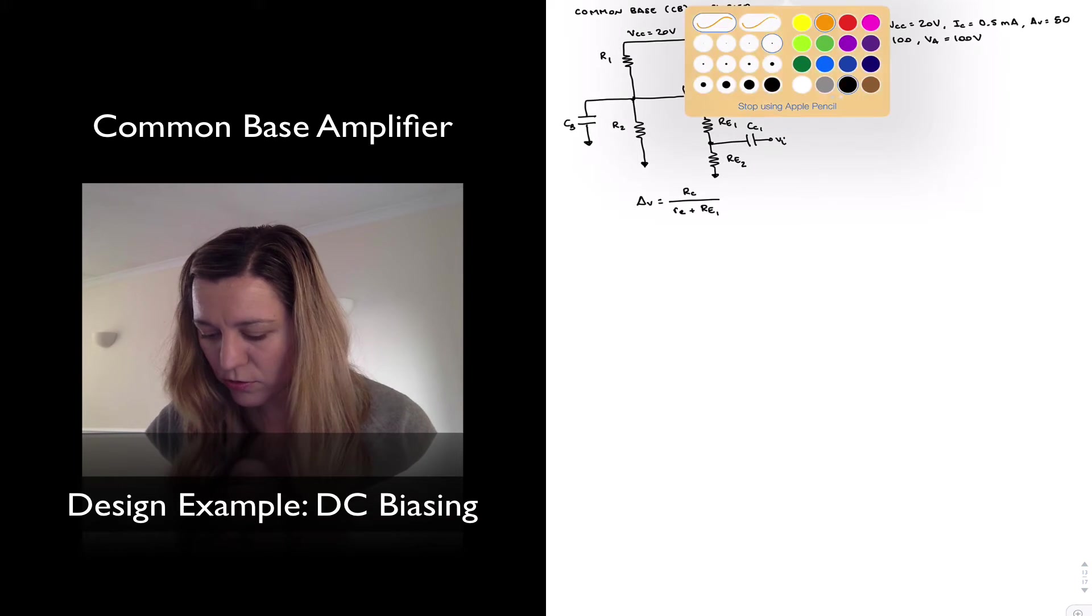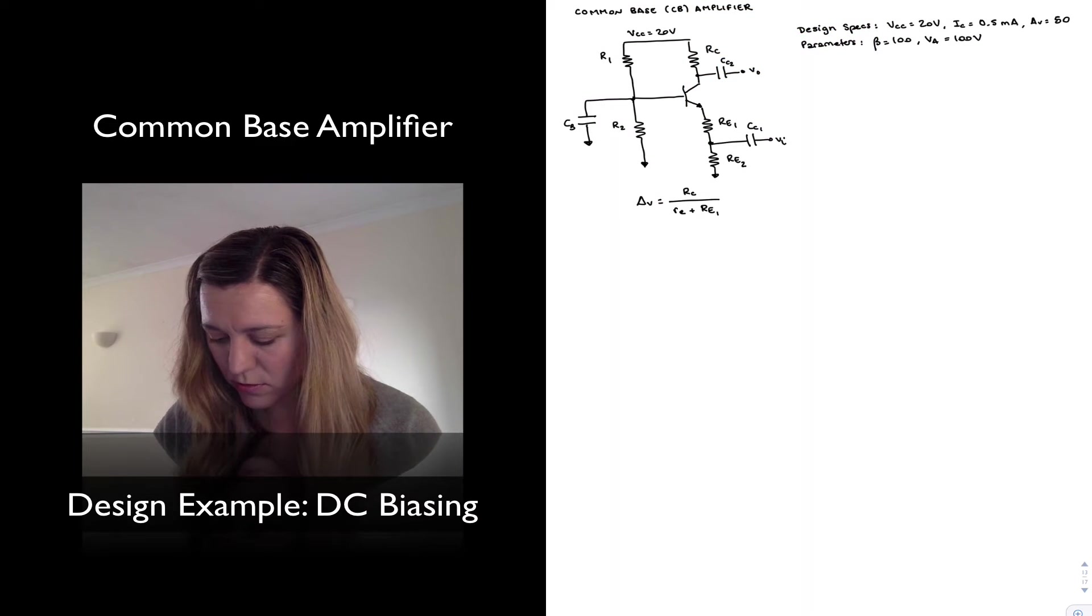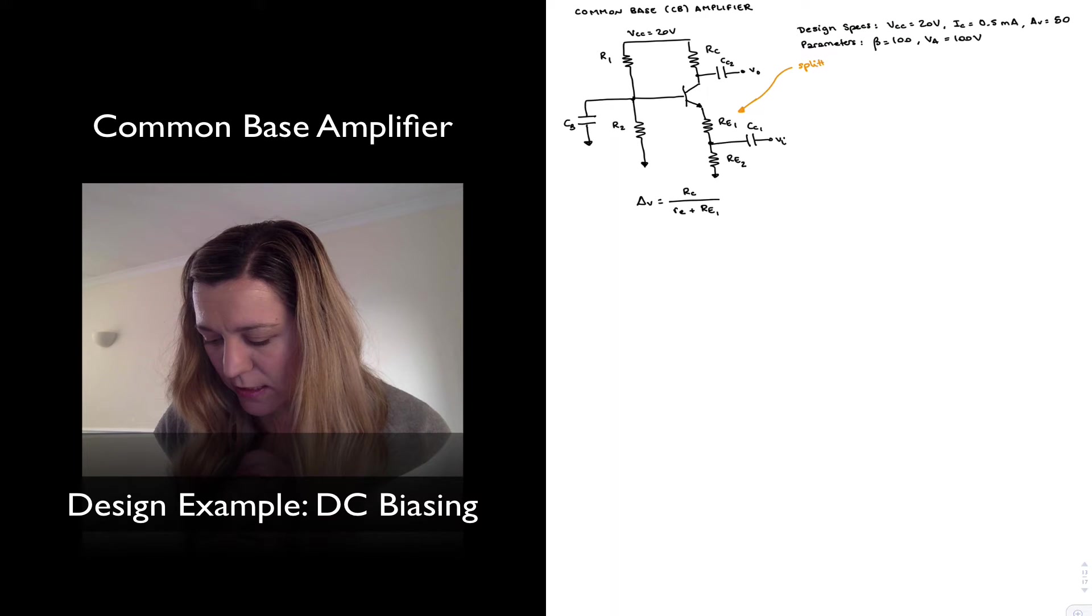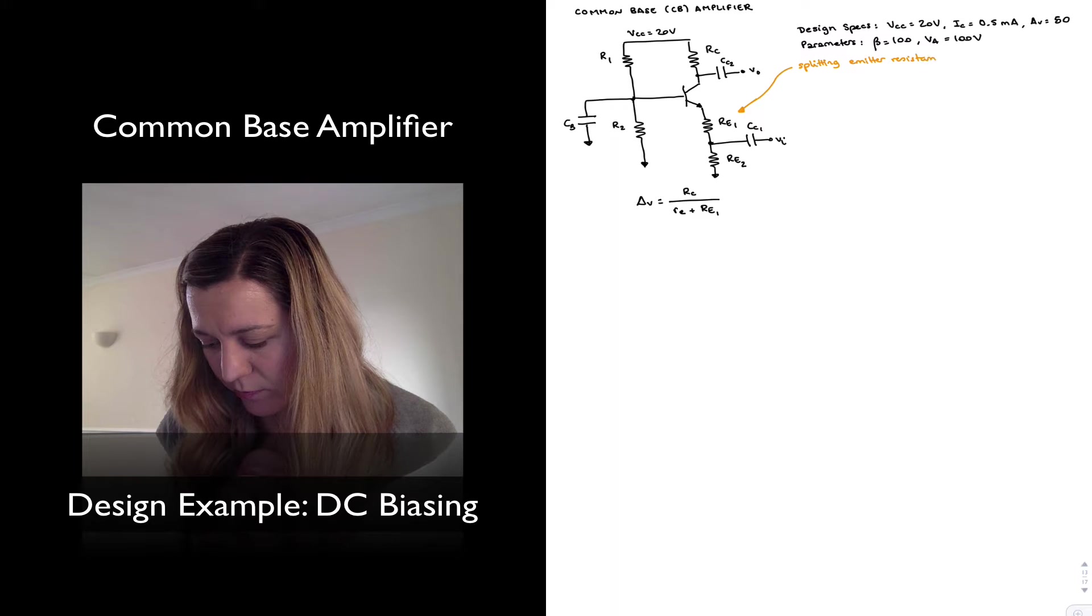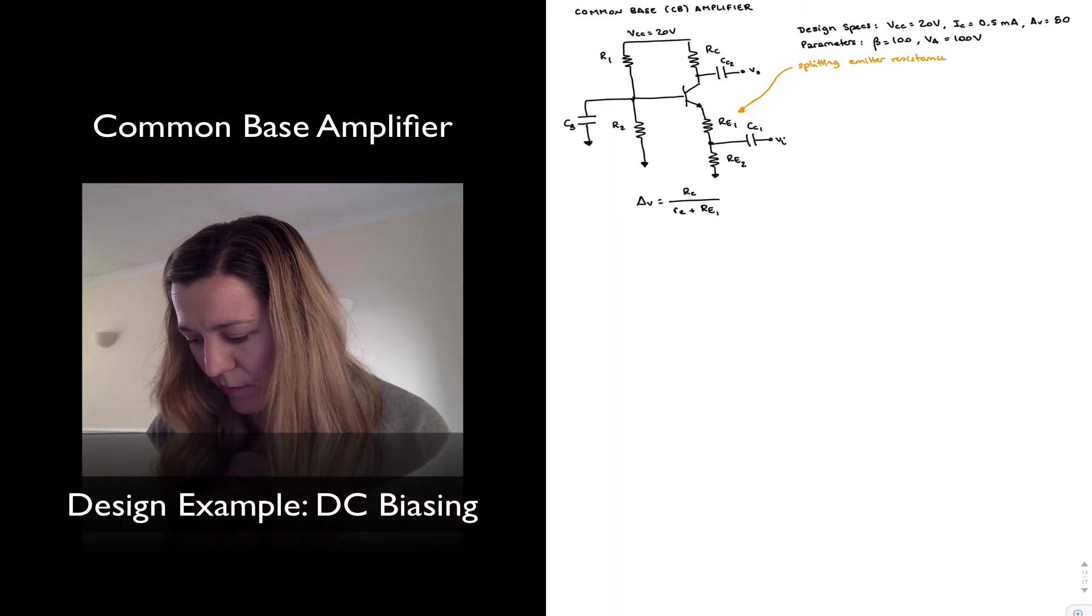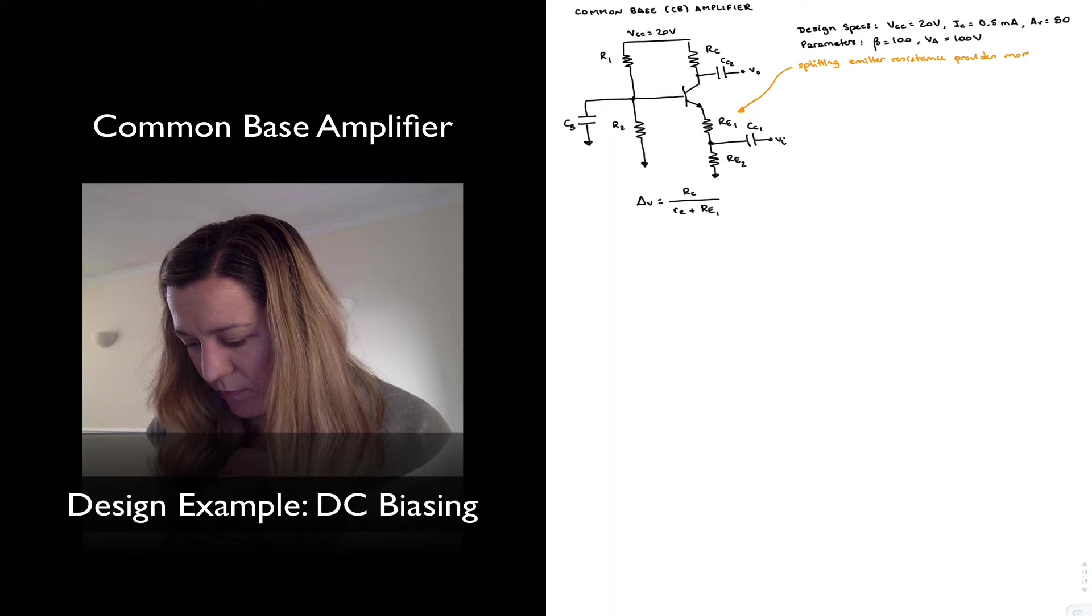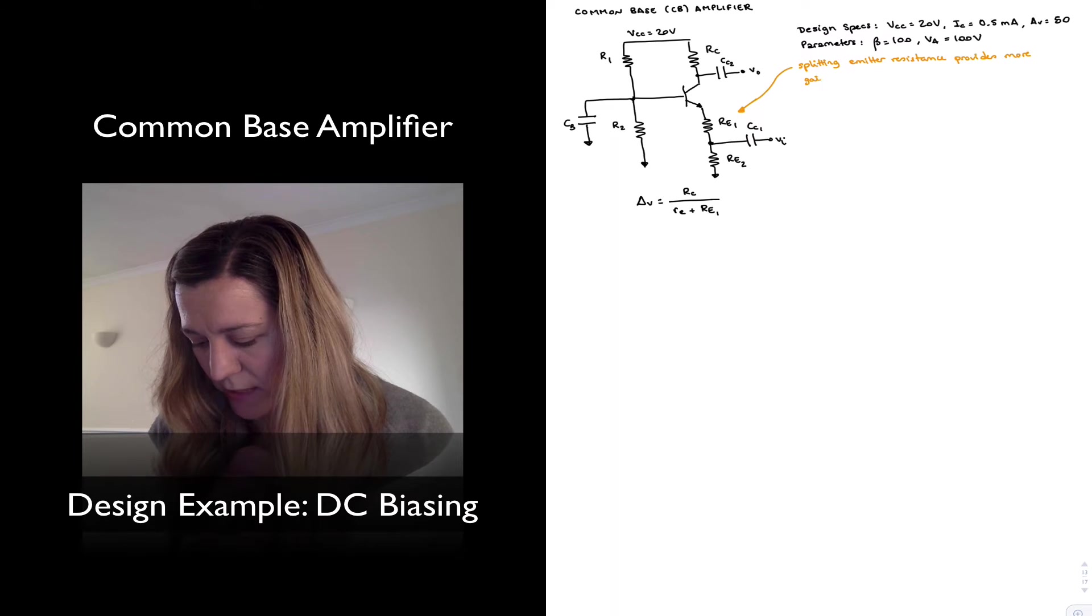And I'm going to make a note here, basically explaining that splitting my emitter resistance provides more gain stability at the expense of reduced gain.